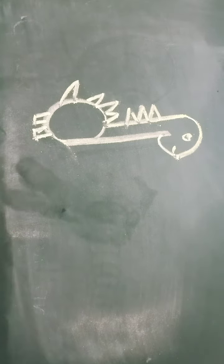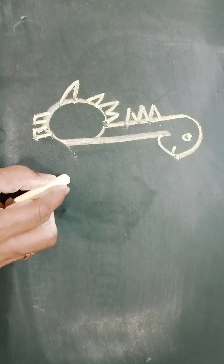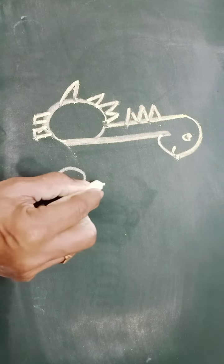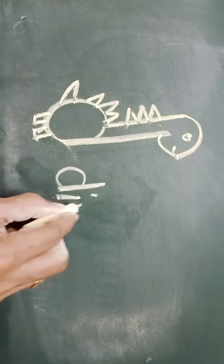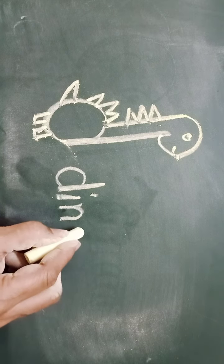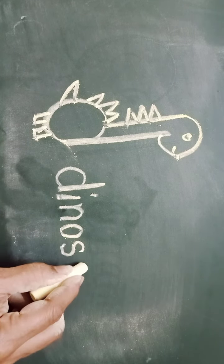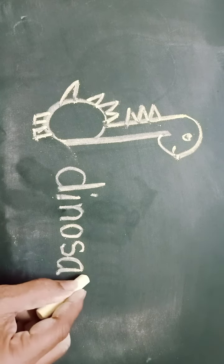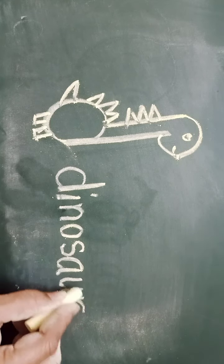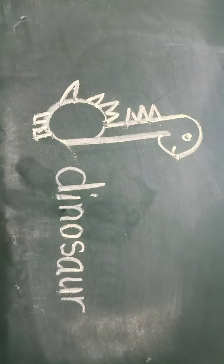And there we are with the dinosaur. D for dinosaur. What is the spelling? Dinosaur: D-I-N-O-S-A-U-R. So children, enjoy drawing the dinosaur.